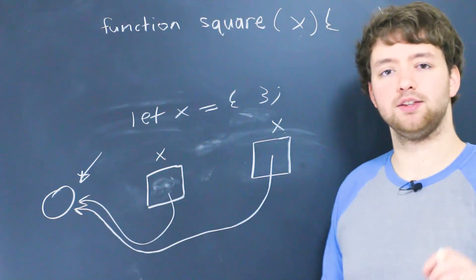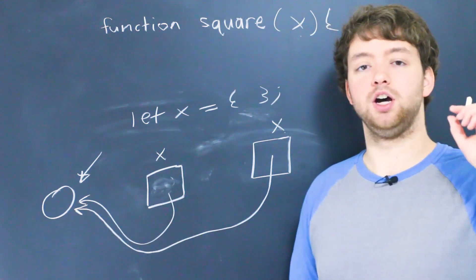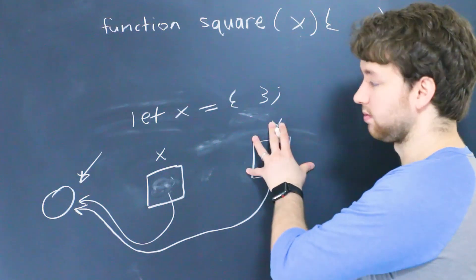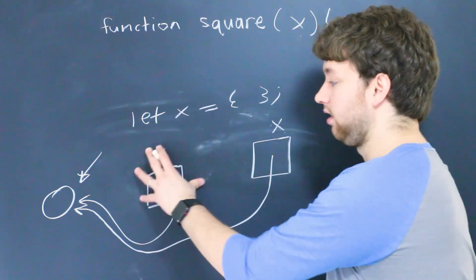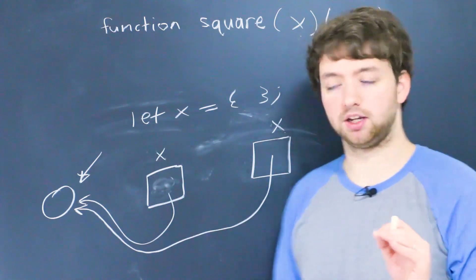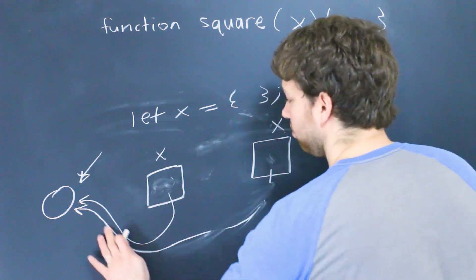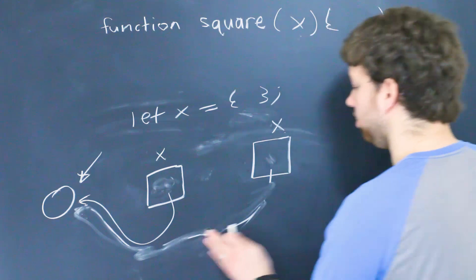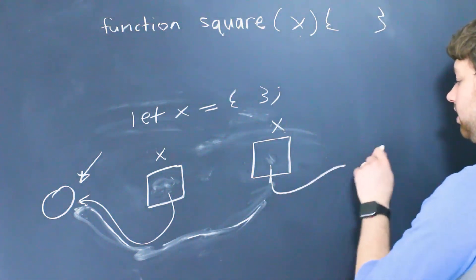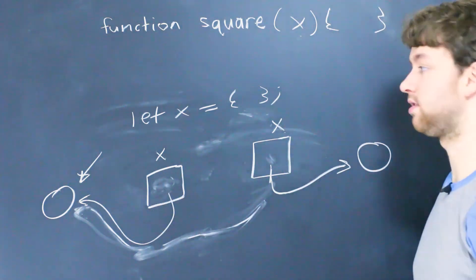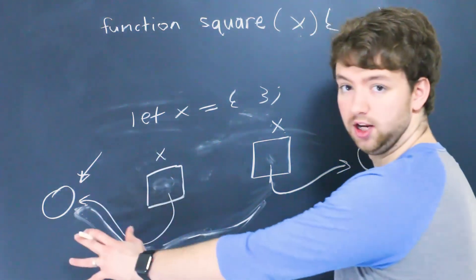Now the exception to this is we can't actually create a new object and assign it to this one and have this one affected because this is what would really be happening. We would be taking this arrow and no longer be pointing it to the old object. We'd be pointing it to a new one so it'd look like something like this. So now these are pointing to two separate things and this one stays unchanged.